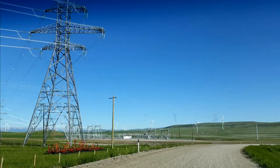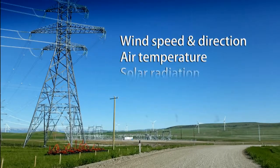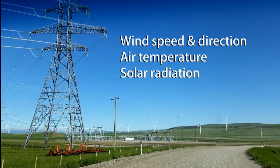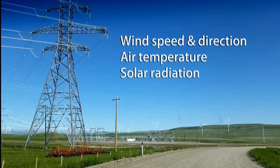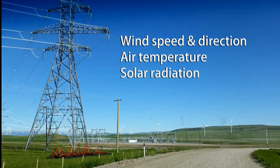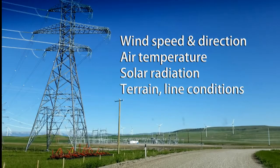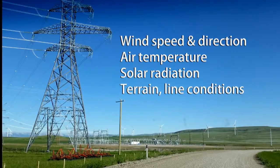It accounts for dynamics such as wind speed and direction, ambient air temperature, and solar radiation exposure, all of which affect the relationship between current and temperature. It also factors in variables such as terrain.